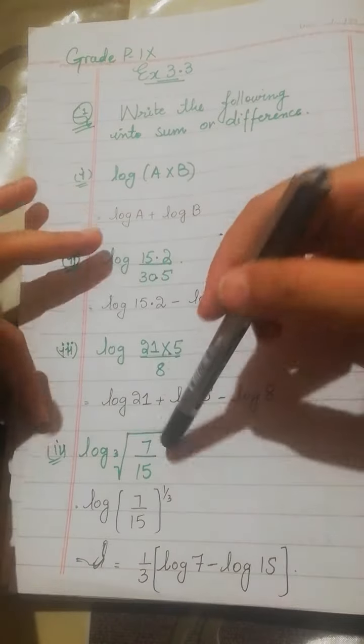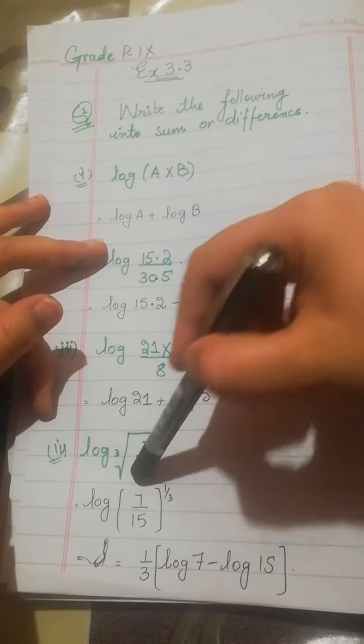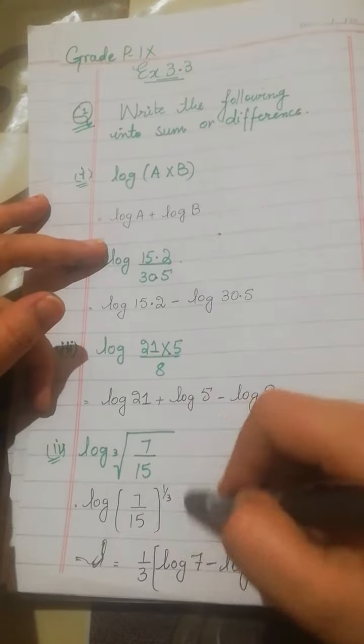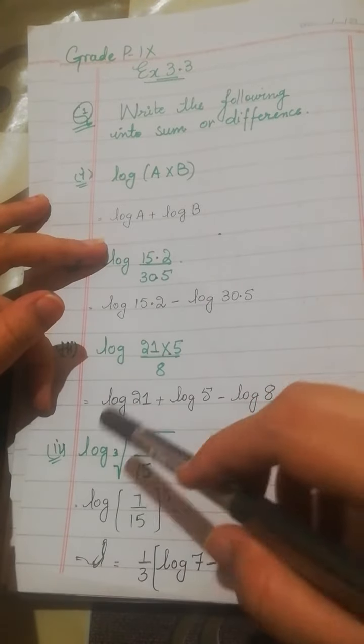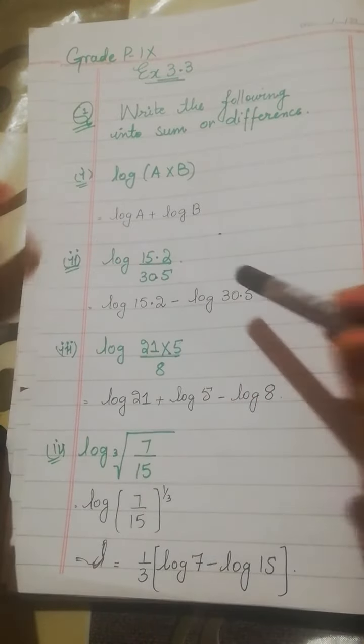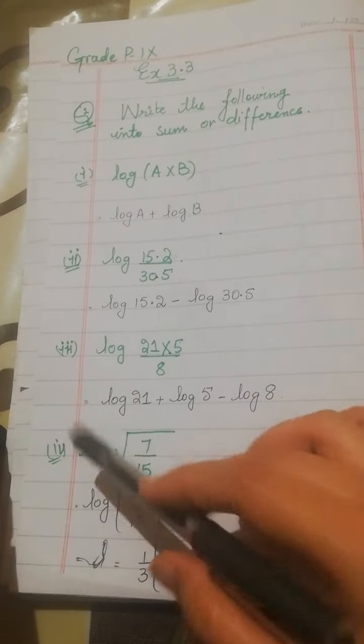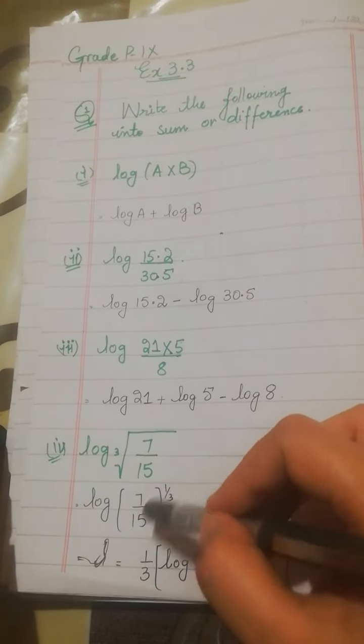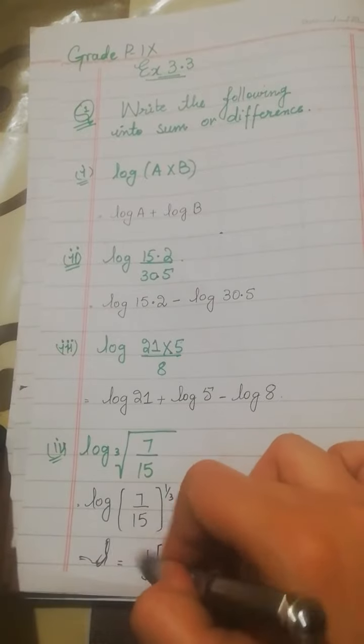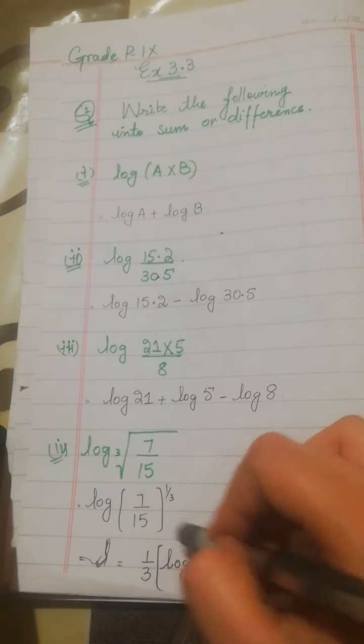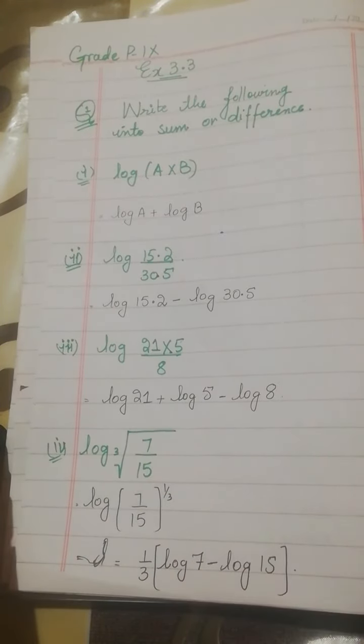In the same way, in the fourth part, log cube root of 7 over 15. Now we will write the cube root in the form of 1 over 3. And now we have a law of log, that when we apply log to power, it will go to the front as 1 over 3. So 1 over 3 log 7, and divided by 15 means minus log 15.